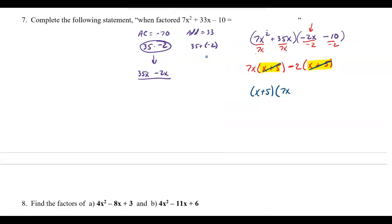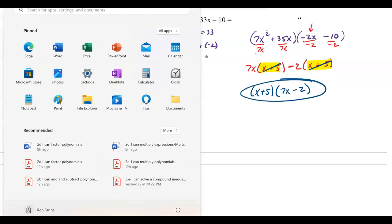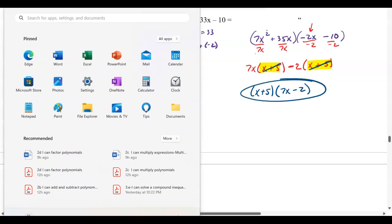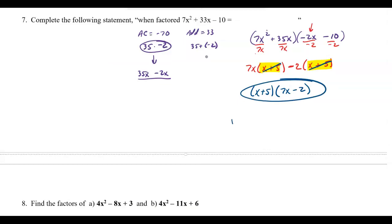I factor out the binomial x plus 5, and what's left over is 7x minus 2. To check: x times 7x is 7x², x times negative 2 is minus 2x, plus 35x minus 10 — and you get back the same expression you started with.